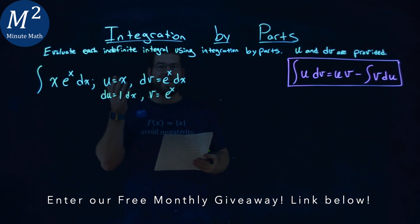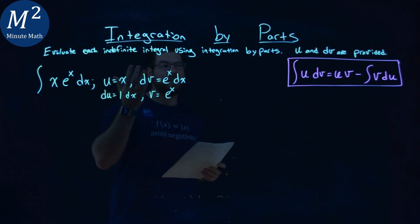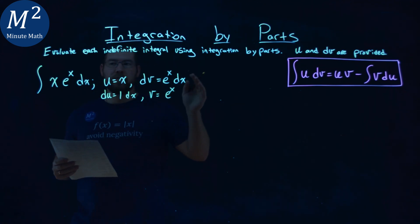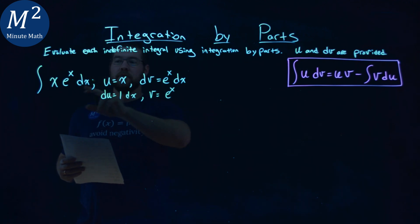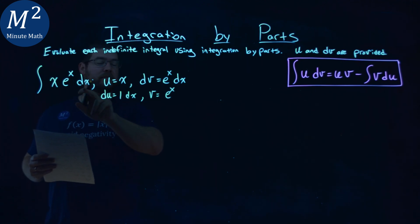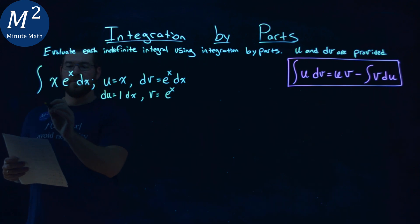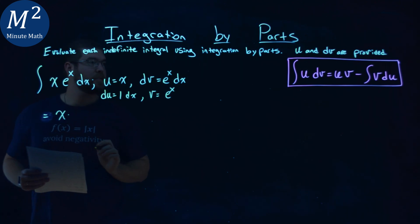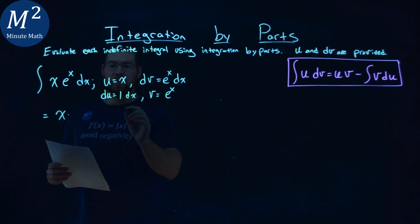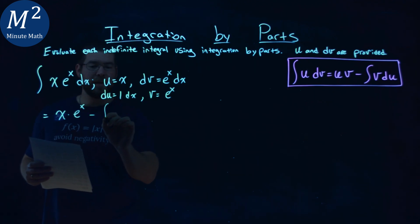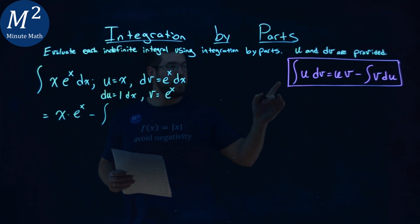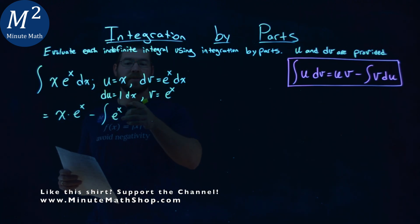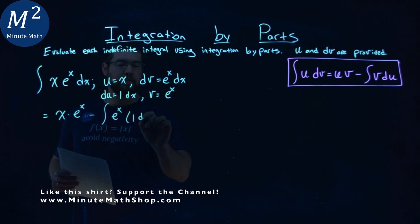So we have it all set up, and now we have to use our formula for integration by parts. So we follow it. It says the integral of u dv, so we set our dv to be e to the x dx, right, is equal to our u value, which is x, times our v value, which is e to the x, minus the integral of v, which is e to the x, and then du, which is 1 dx.